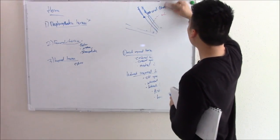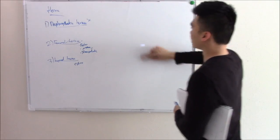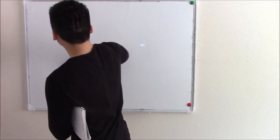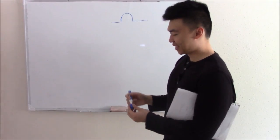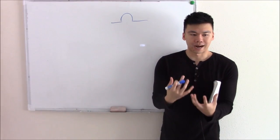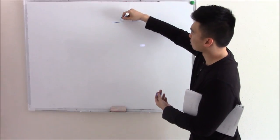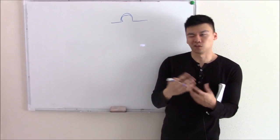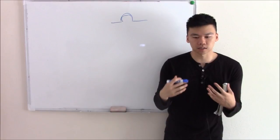Let's talk about diverticulum. A diverticulum is an outpouching of tissue. By definition, a diverticulum that contains all your tissue layers is called a true diverticulum. If only a few layers outpouch — like only your mucosa or submucosa — we call that a false diverticulum.